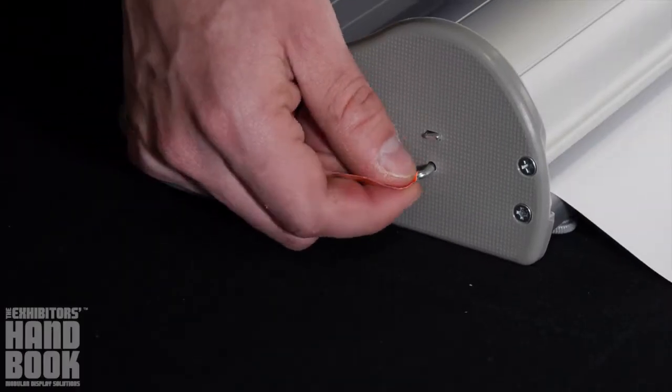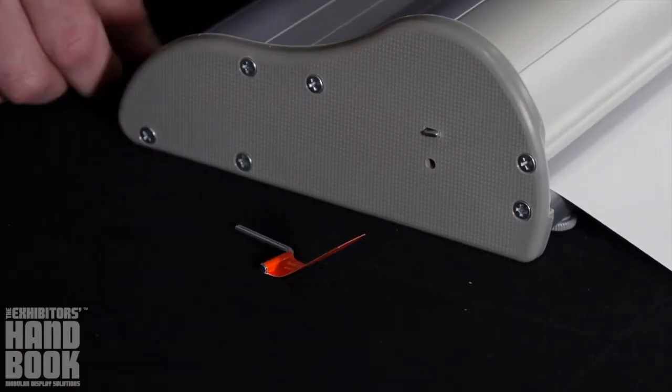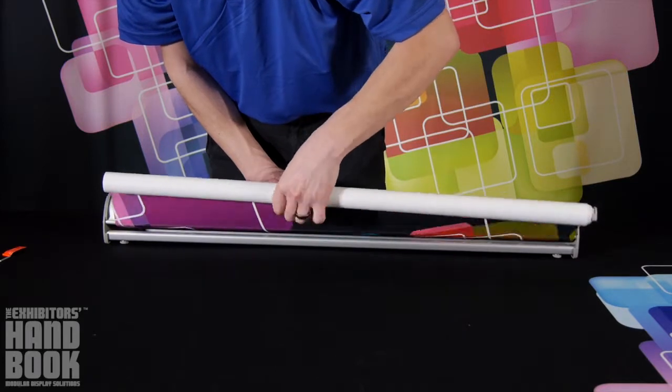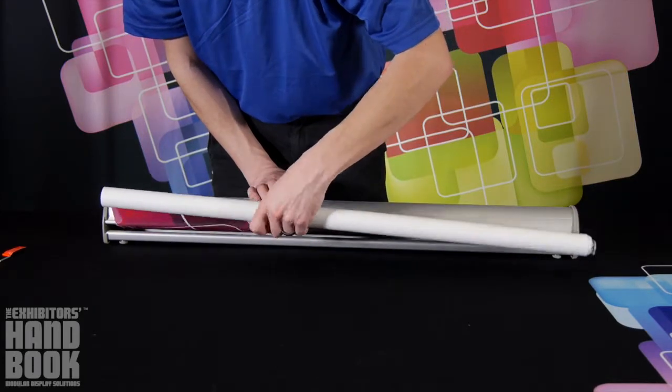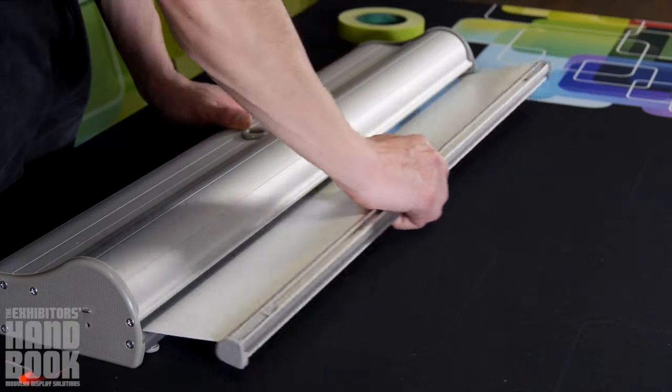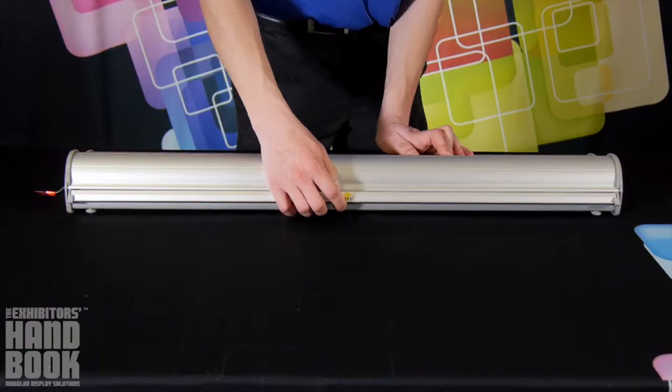Grasp your graphic firmly and remove the pin from the right side of the base. Slowly feed the graphic into the stand. Once complete, your Orient retractable banner stand is ready for display.